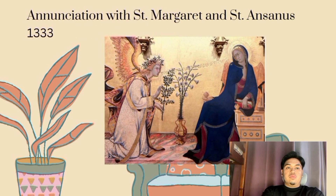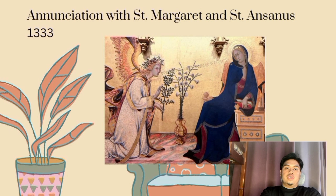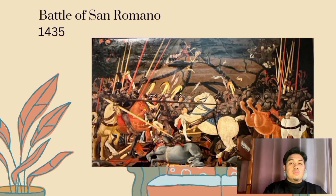Simone Martini was a major figure in the development of early Italian art and an important exponent of the Gothic style of painting. Martini did more than any of the artists who spread the influence of Sienese painting. The Annunciation is his masterpiece and is not only one of the most outstanding works of Gothic painting.